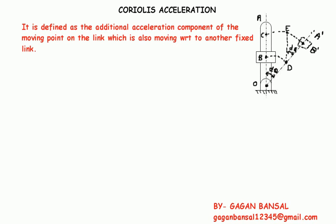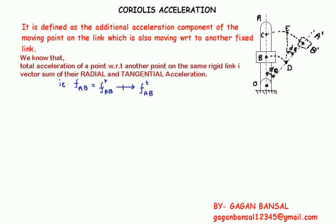We have seen that the total acceleration of a point with respect to another point on the same link is the vector sum of their radial and tangential accelerations. That is, total acceleration equals the radial component plus the tangential component.